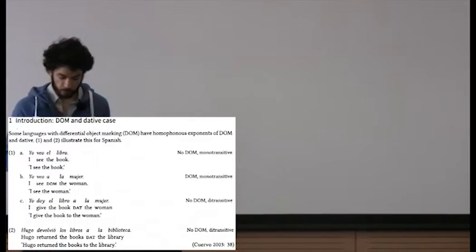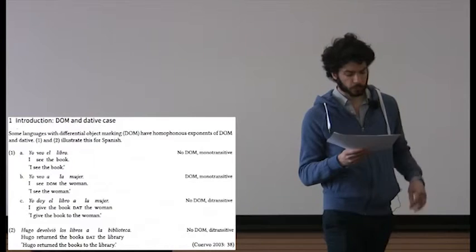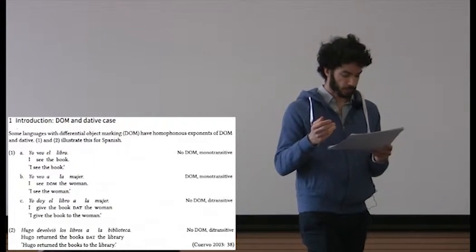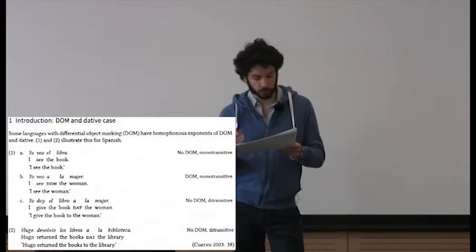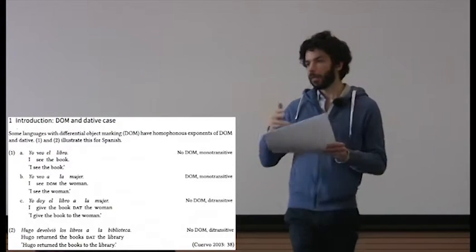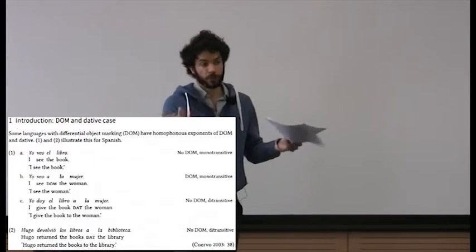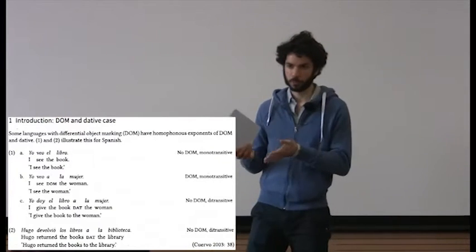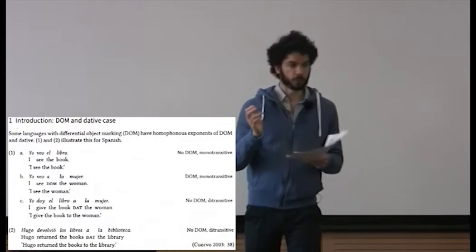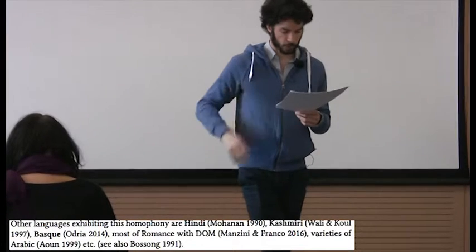Example 2 shows another ditransitive with the verb 'return,' showing that if we have an inanimate recipient or goal argument, like 'library,' we still get this 'a' marker, even though we have an inanimate argument. So direct objects have differential marking — that's what the name says — but indirect objects are introduced by 'a' in Spanish in general. Spanish is not the only language which does something like this, though most of the data will be from European Spanish.